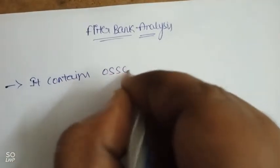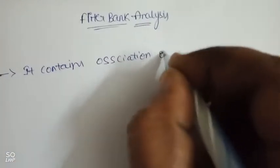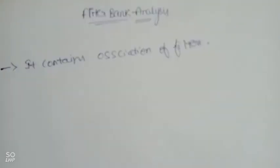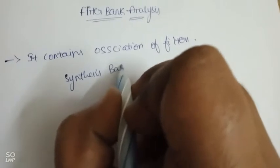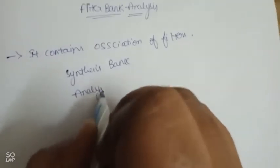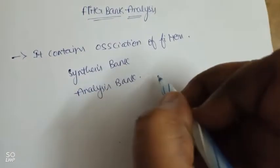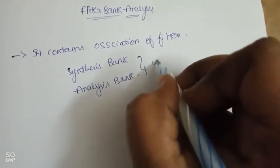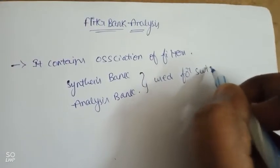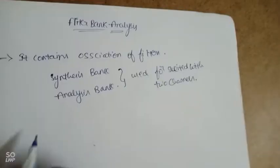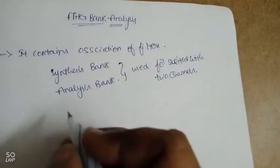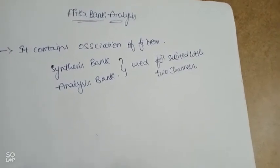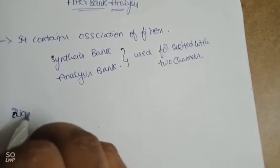A filter bank contains an association of filters. There are two main components: the analysis bank and the synthesis bank. The analysis bank is used to decompose the signal, and the synthesis bank is used to rebuild the original signal.